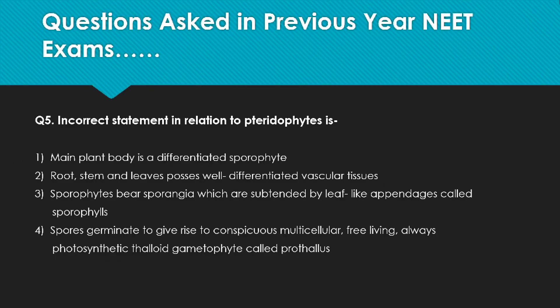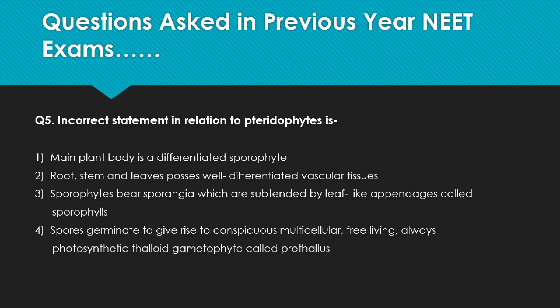Let's move on to the next question: find the incorrect statement in relation to pteridophytes. Looking at the options — these are lines from NCERT. The first option says the main plant body is a differentiated sporophyte, which is correct because in pteridophytes the sporophyte is the dominant phase. The second option says roots, stem, and leaves possess well-differentiated vascular tissues, which is also correct. The third option says sporophytes bear sporangia subtended by leaf-like appendages called sporophylls — this is a correct and direct statement from NCERT.